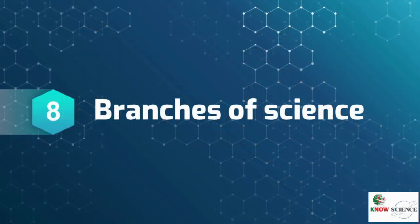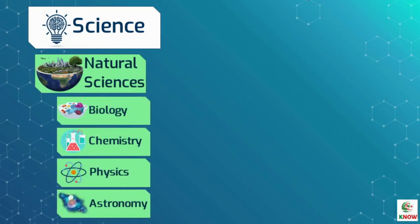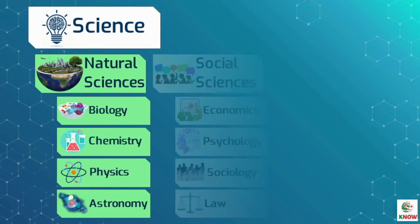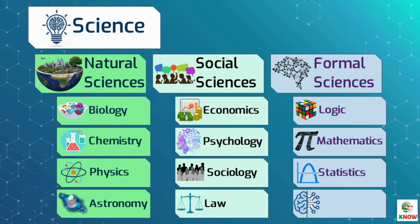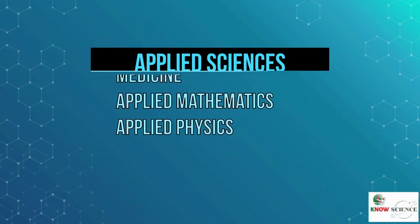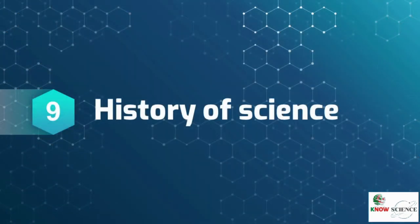Science is typically divided into three major branches: the natural sciences — such as biology, chemistry, and physics — which study nature in the broadest sense; the social sciences — such as economics, psychology, and sociology — which study individuals and societies; and the formal sciences — such as logic, mathematics, and theoretical computer science — which study abstract concepts. Disciplines that use existing scientific knowledge for practical purposes, such as engineering and medicine, are described as applied sciences.